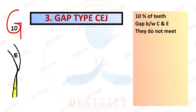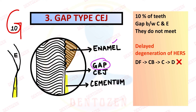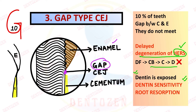The third type is gap type, seen in 10% of teeth, where there is a gap between cementum and enamel. In the diagram, show a gap between cementum and enamel. It forms due to delayed degeneration of HERS, so normal cementum is not formed and dentine is exposed. Clinically, exposed dentine can cause dentine sensitivity due to dentinal fluid movement. There can also be root resorption, and if bacteria reach this area, root caries can occur. These are the clinical significance of the gap type of CEJ.